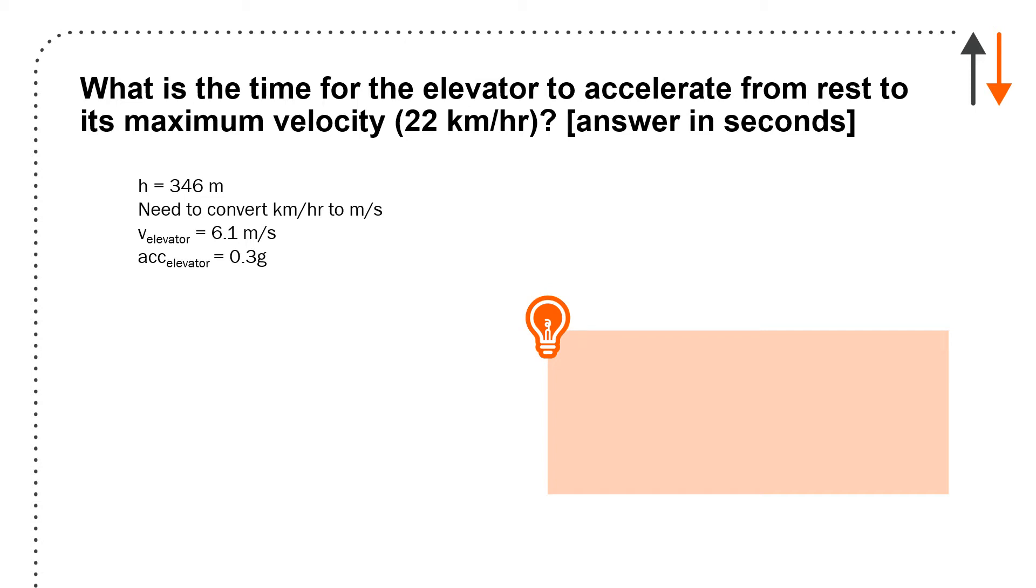You have to recognize that 22 kilometers per hour is pretty useless, so convert that to meters per second: 6.1 meters per second. The velocity of the elevator is just the initial velocity plus the acceleration (0.3g) times time. Since it starts from rest, initial velocity is zero, so the time for acceleration is 2.1 seconds.